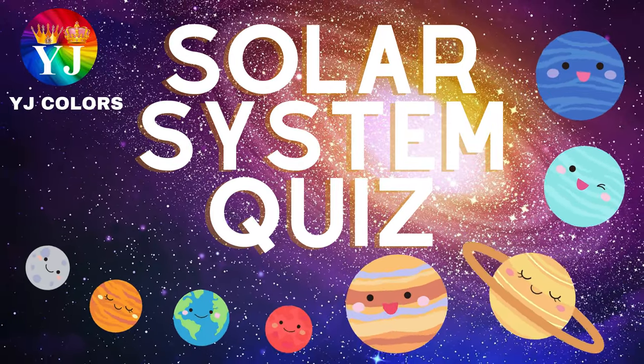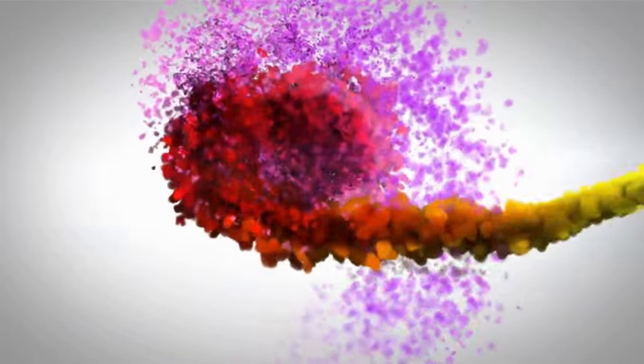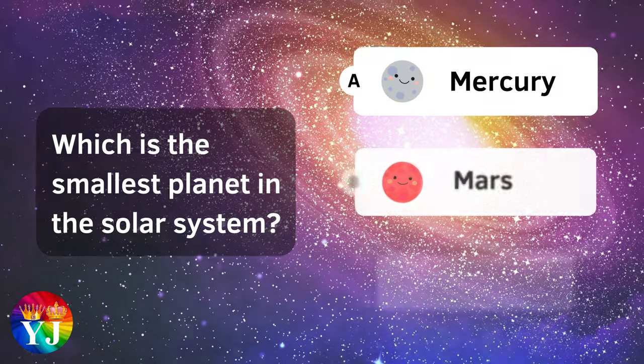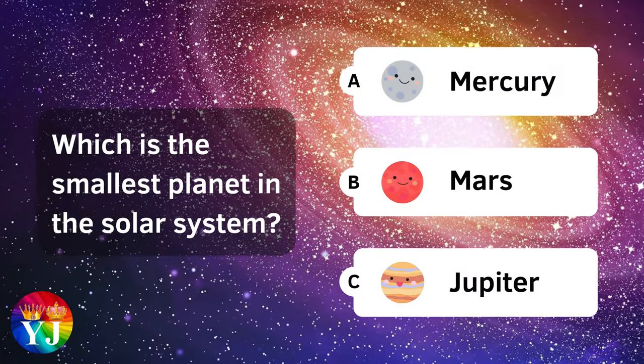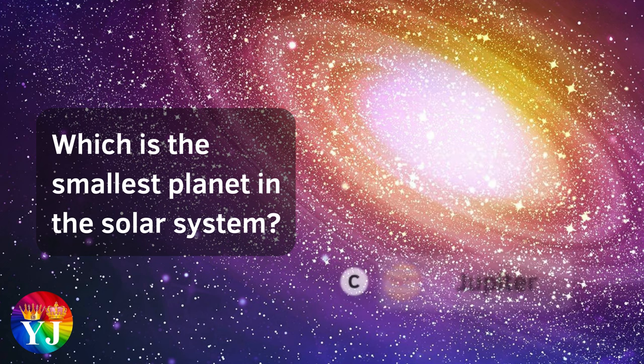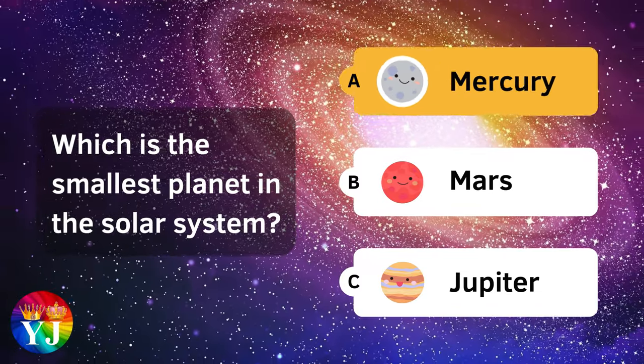Solar System Quiz. Which is the smallest planet in the solar system? Mercury.